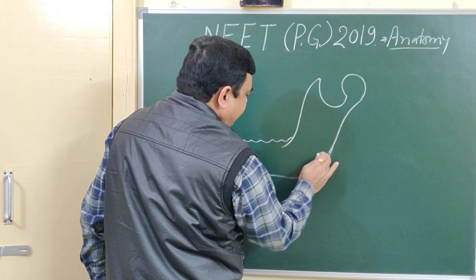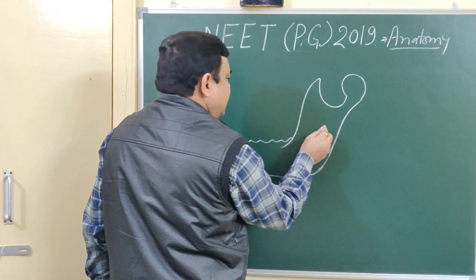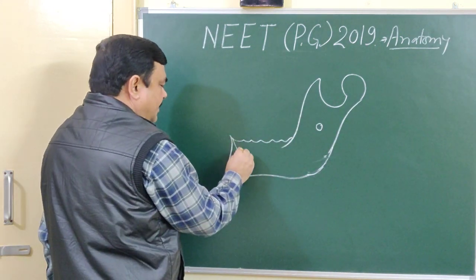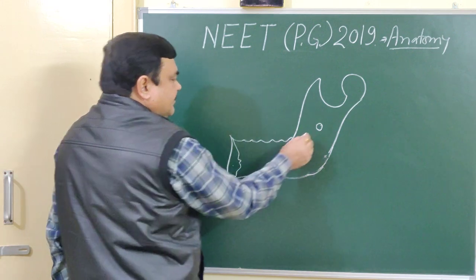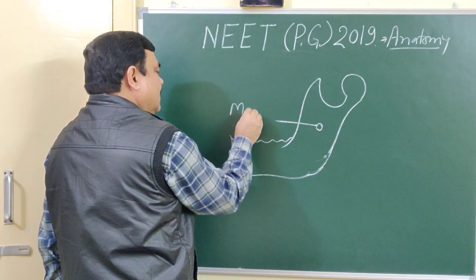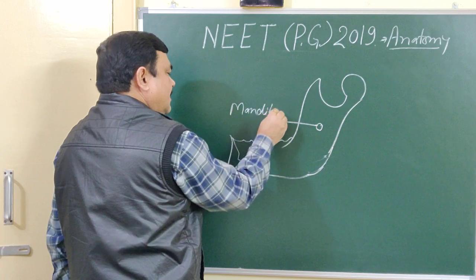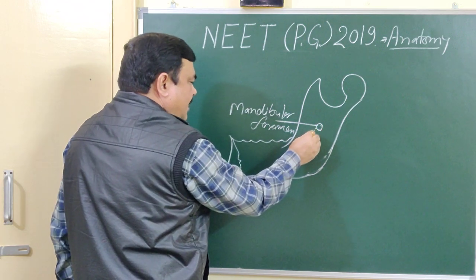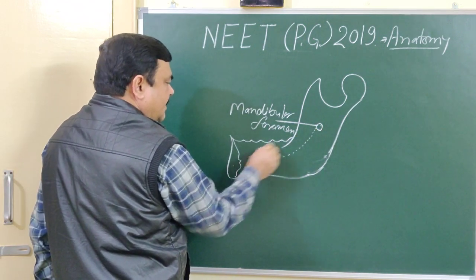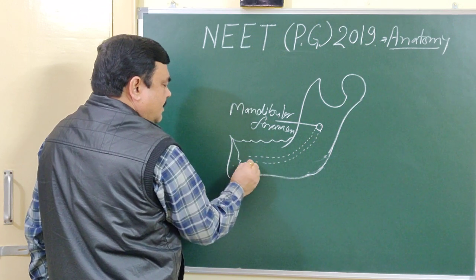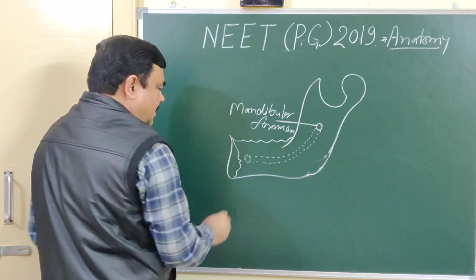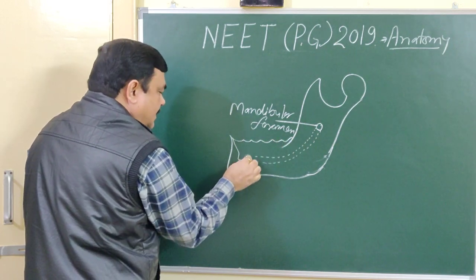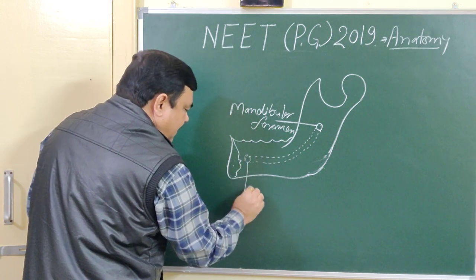This is the mandible. Here is the foramen. This is the inner aspect of the mandible. This is the mandibular foramen. From this foramen to the mental foramen — the mental foramen lying on the outside. This is the inner aspect; it lies on the outer aspect. This is the mental foramen.